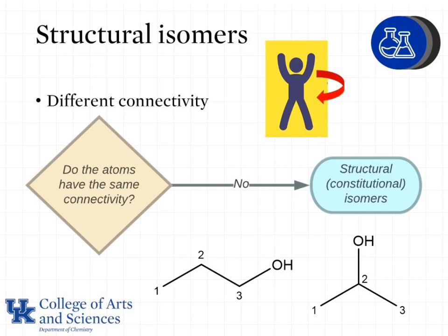They are still isomers because they have the same chemical formula, but the atoms are connected in a different way. If I trace along and put a finger on carbon one of both molecules, those are the same. Moving to carbon two, the molecule on the left is a CH2, while the molecule on the right at carbon two has a CH and an OH attached — so there's something different about the connectivity between atoms.